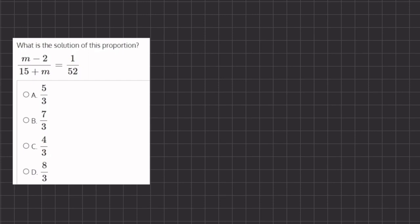All right, so in this problem we want to find the solution to the proportion. A direct way we can solve is by simply cross-multiplying, and then we are left with 52 times (m - 2) equals 1 times (15 + m).